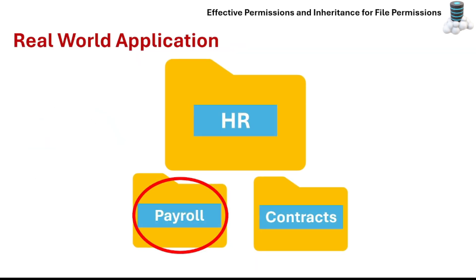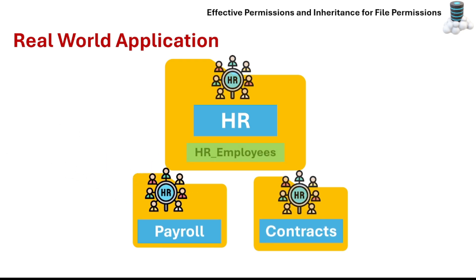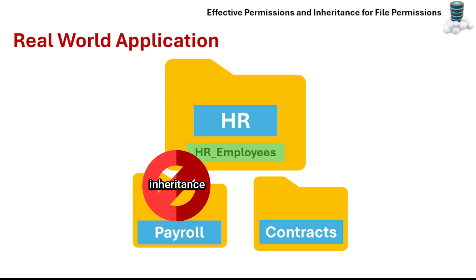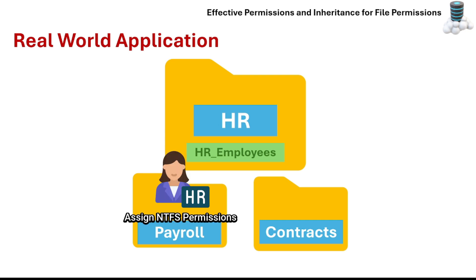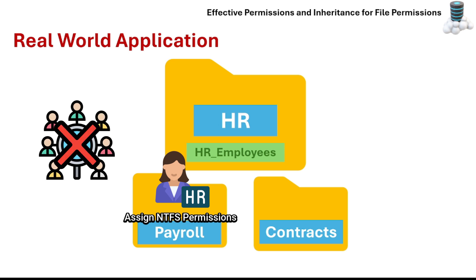Here's a real-world application example: an HR department has a payroll folder that should only be accessible to payroll managers. However, an IT admin notices that all HR employees have access due to inherited permissions from the HR folder. The solution is to disable inheritance for the payroll folder and manually assign NTFS permissions to restrict access to just the payroll managers and not the entire HR team.